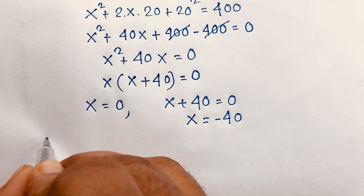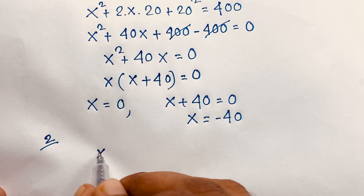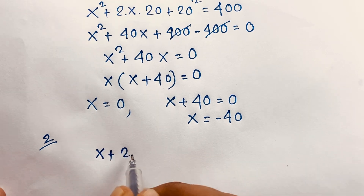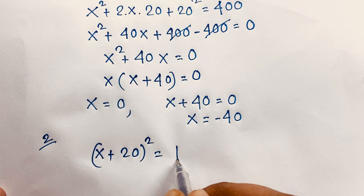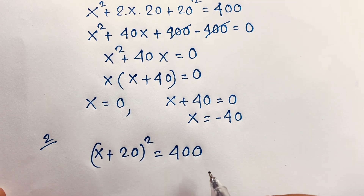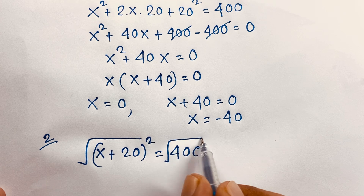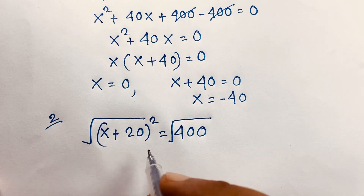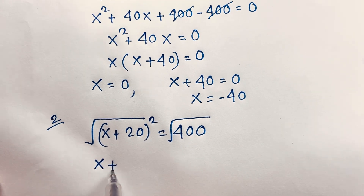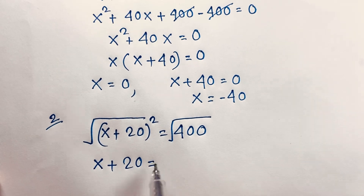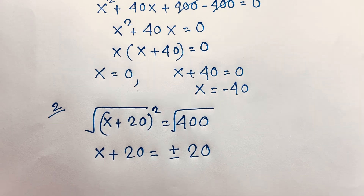Now, second method. Our question is (x + 20)² = 400. I apply a square root to both sides. The square root cancels the power, giving x + 20 = ±20.